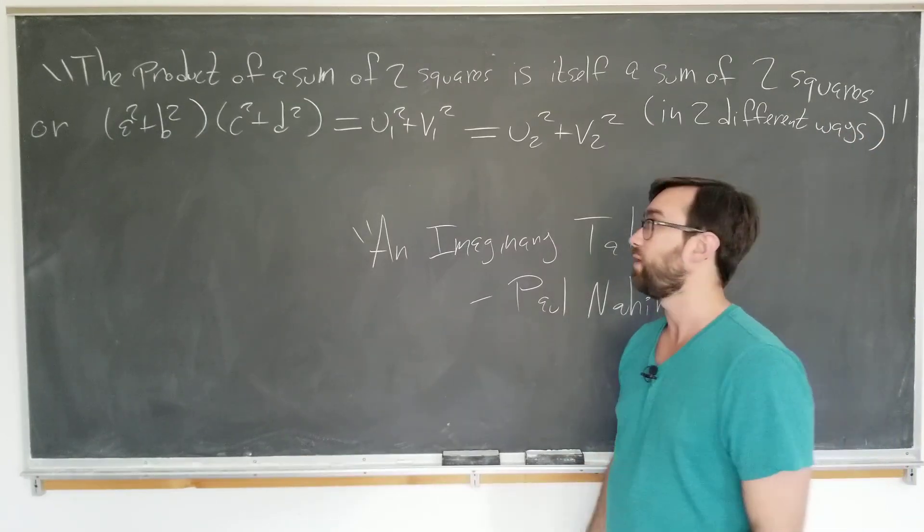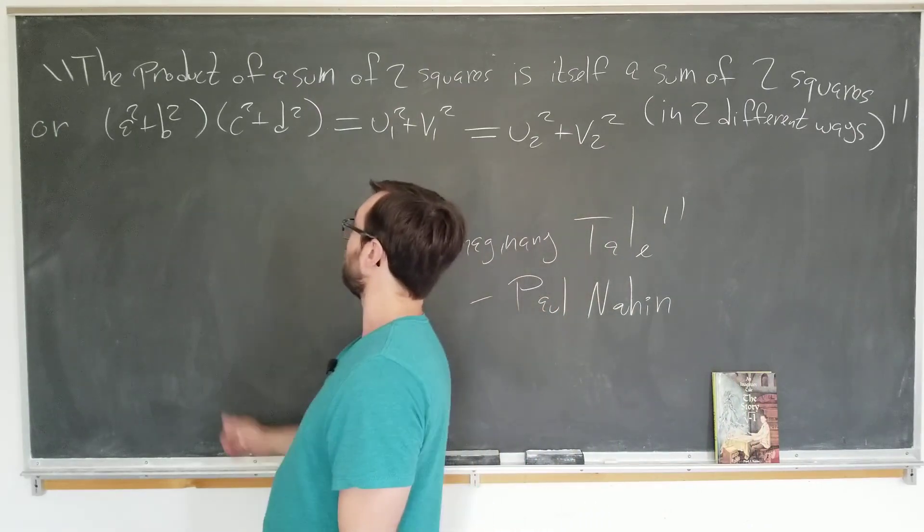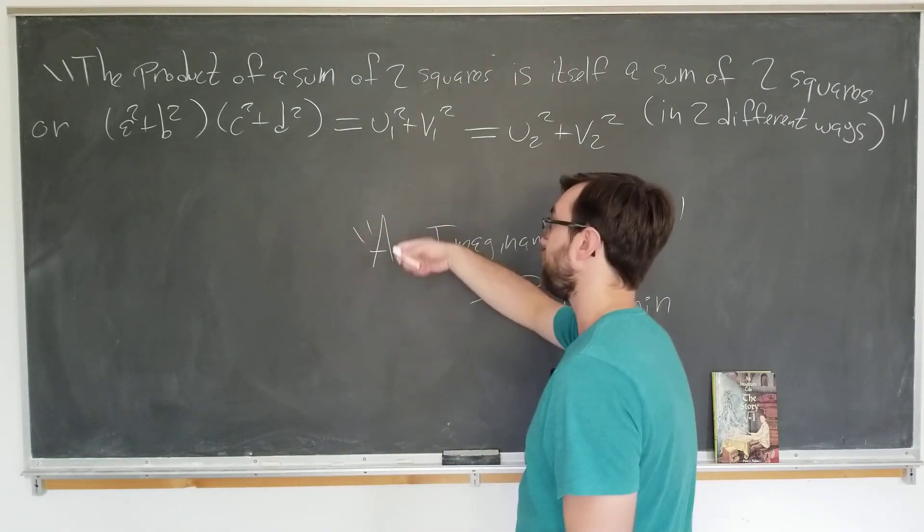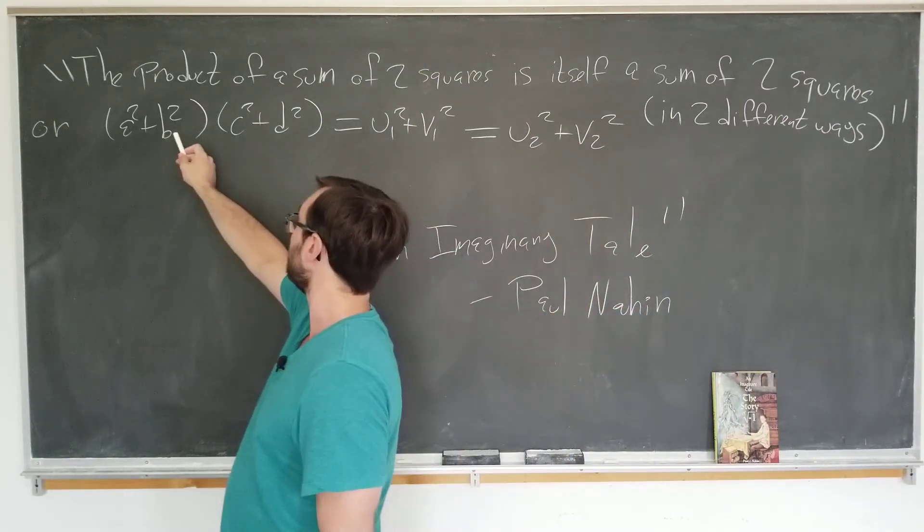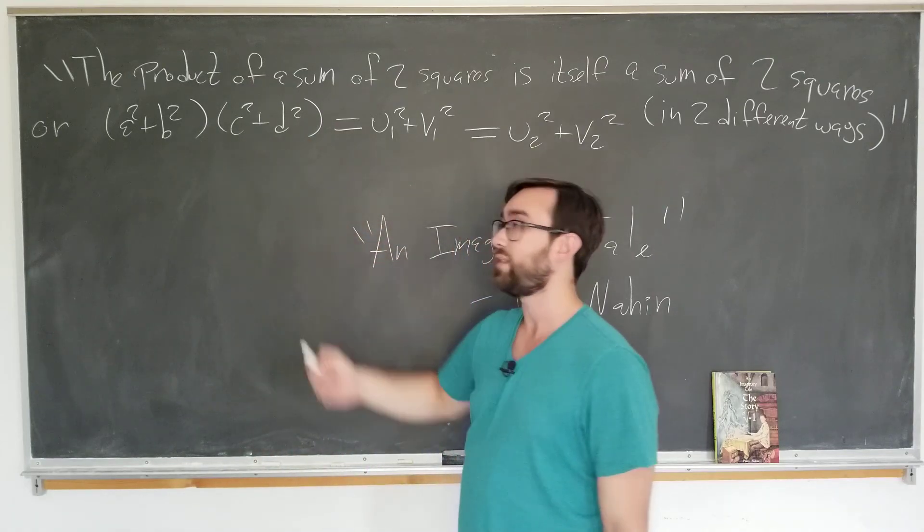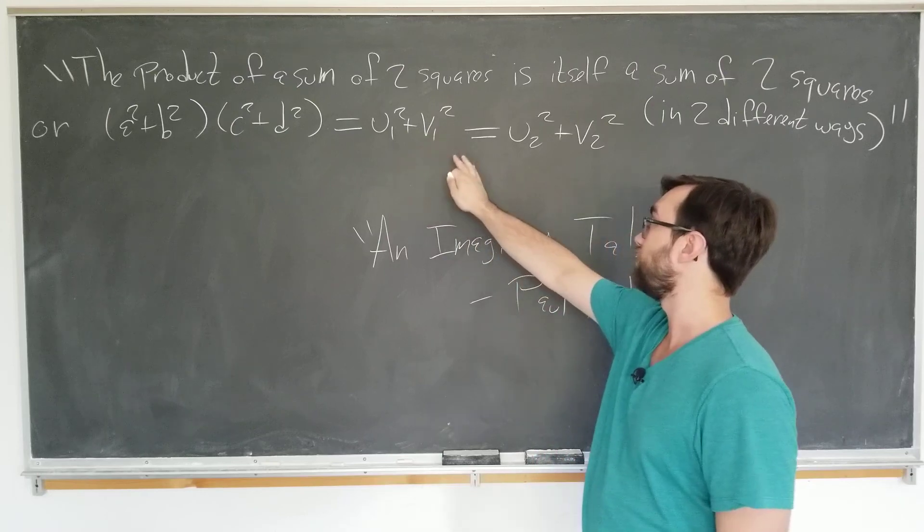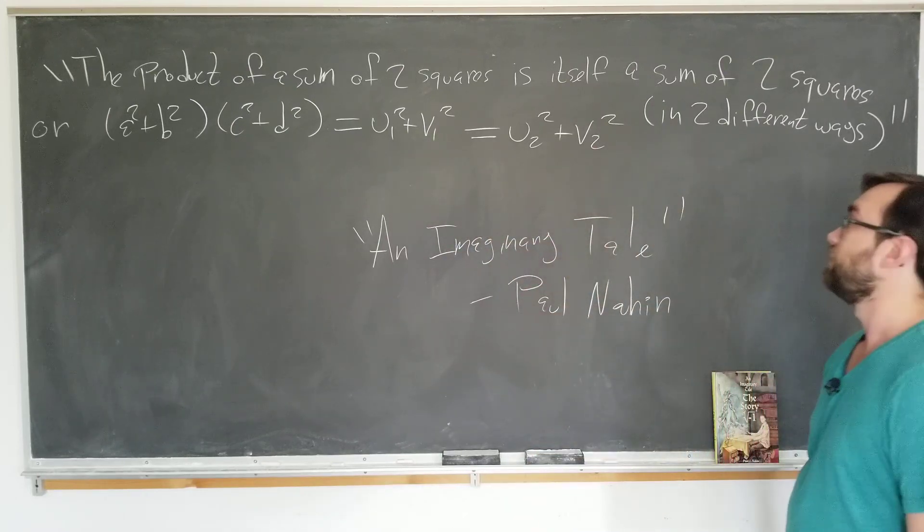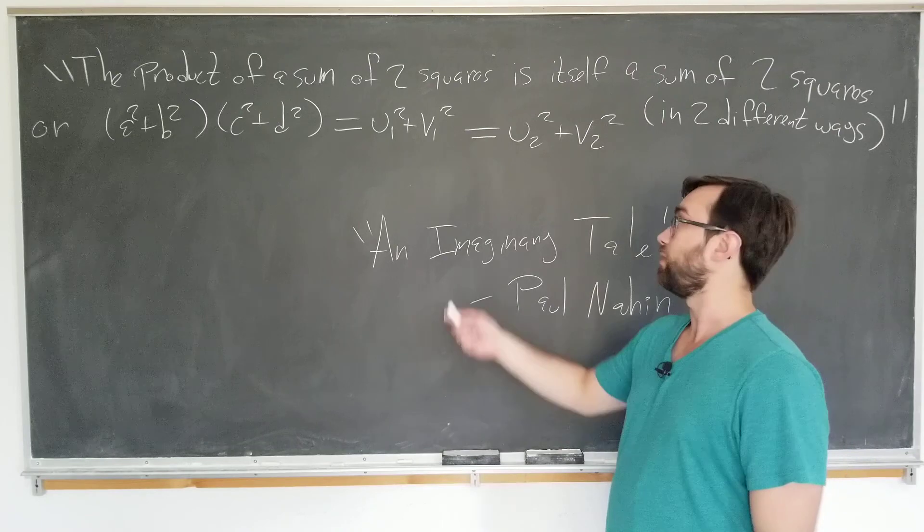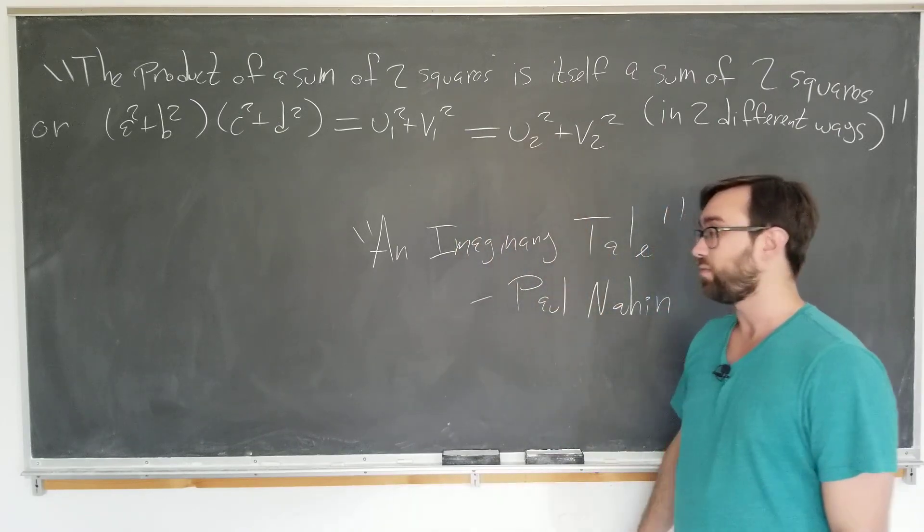If we write this in mathematical symbols, it says if we have four integers a, b, c, and d, if I square a and b and add them, square c and d and add them, itself should be the product of two other integers squared and added. They have to be two distinct sets of integers, so the u's and v's are not equal here.